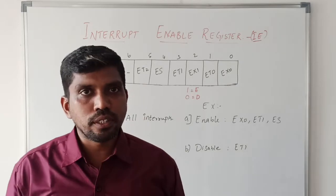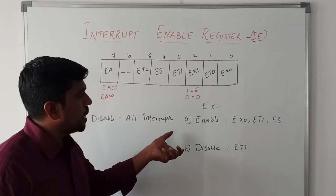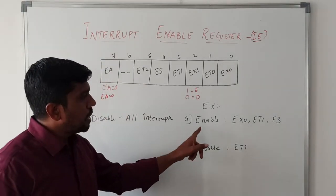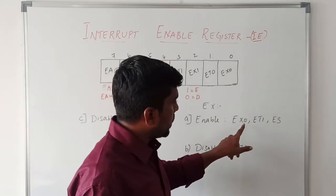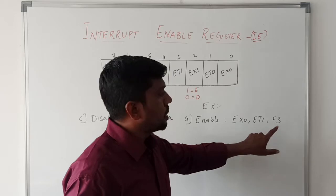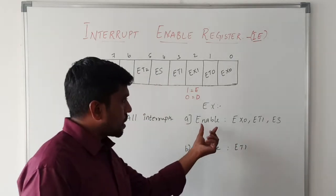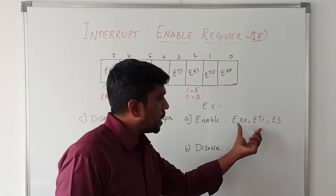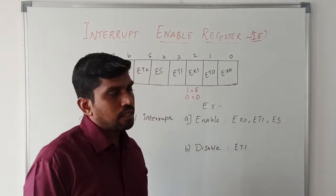Here I am taking three examples. The first example: enable external hardware interrupt zero, enable the timer one interrupt, enable the serial code interrupts. The first example says only enabling these three interrupts.